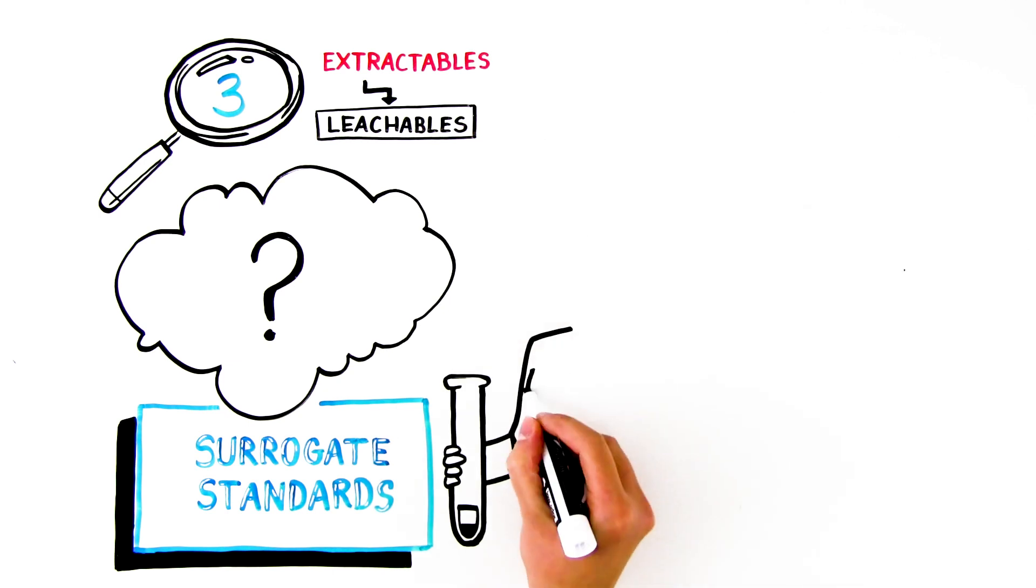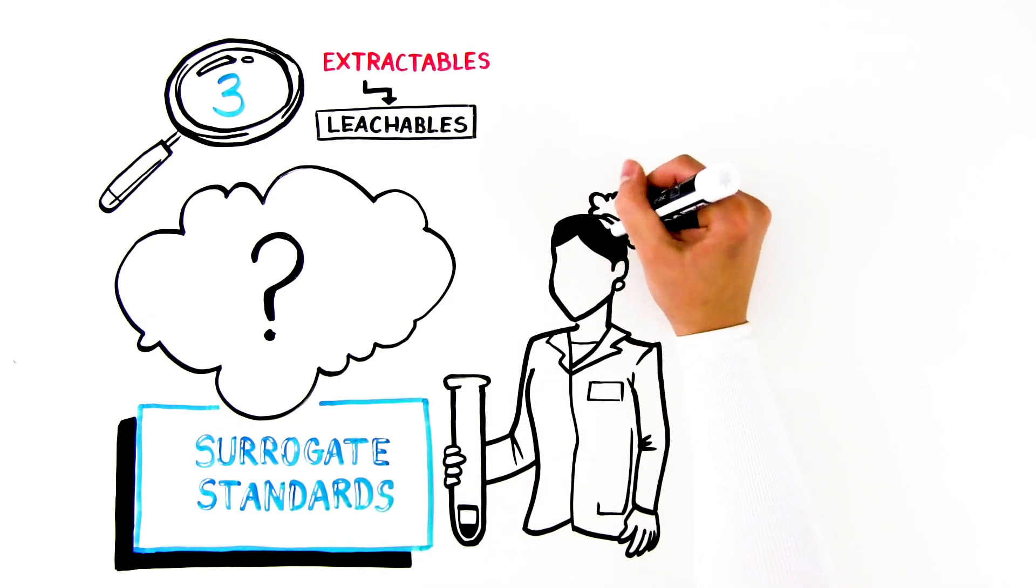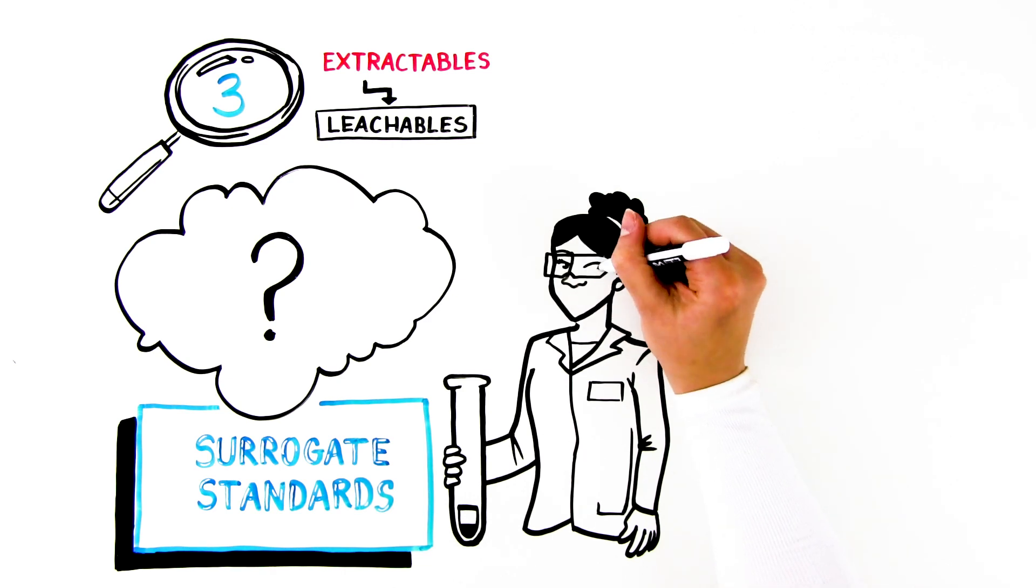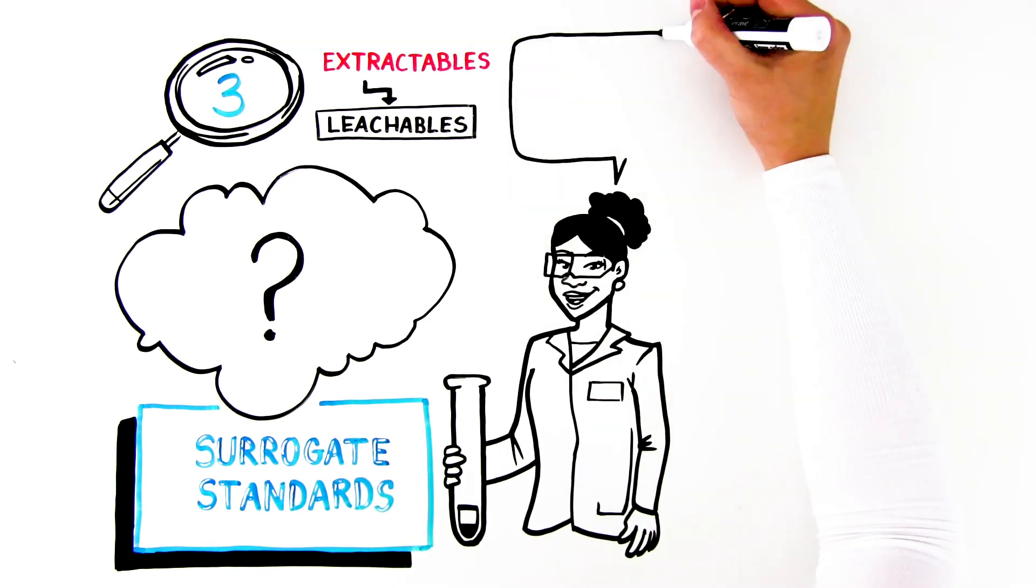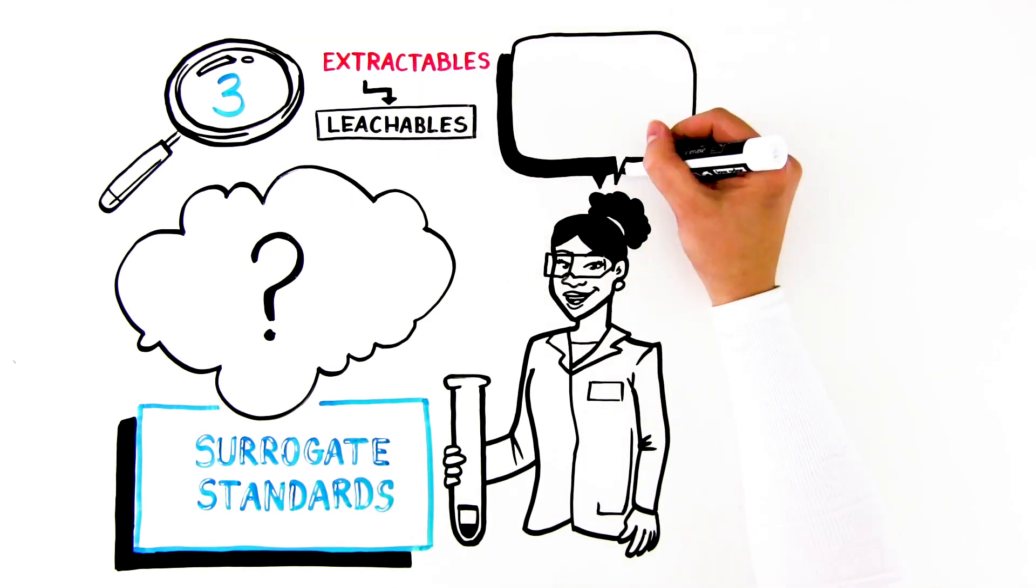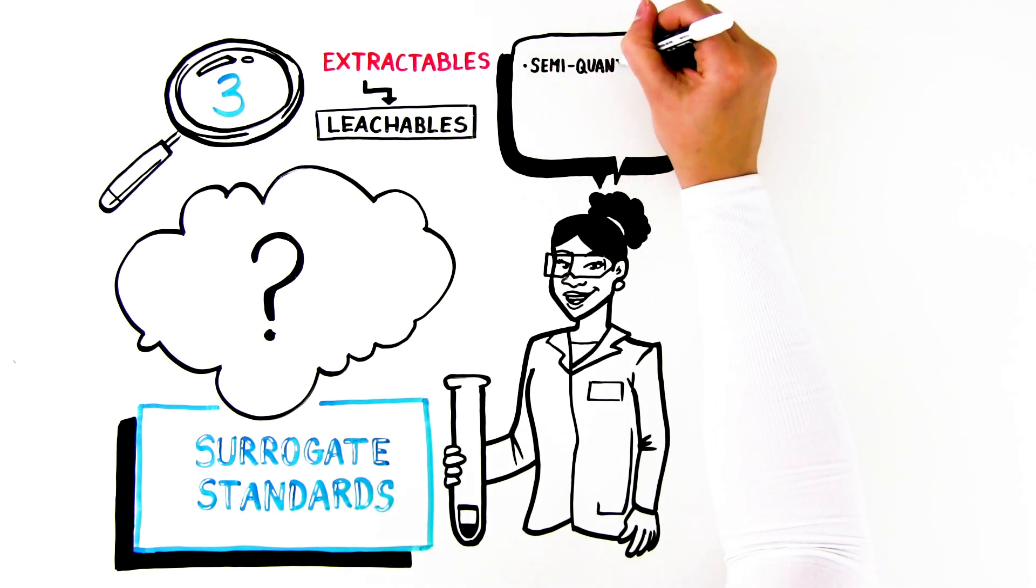Since the surrogate standard will not have the same response factor as the unspecified compound, there's an uncertainty to the accuracy of the amount calculation. Thus, the result is considered semi-quantitative, and the level of estimation, or uncertainty,